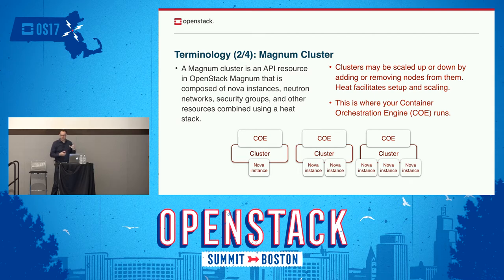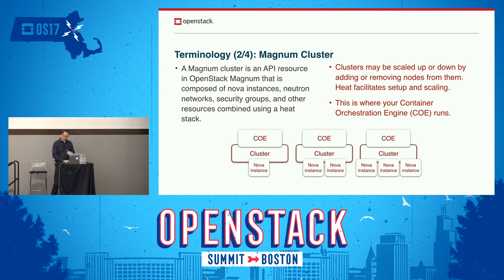Those clusters, once they exist, can be scaled up and down. The clusters running the COE are composed of Nova instances — you can add and subtract Nova instances. You can start small and get large, or start large and get small. That's all built into the Magnum API.